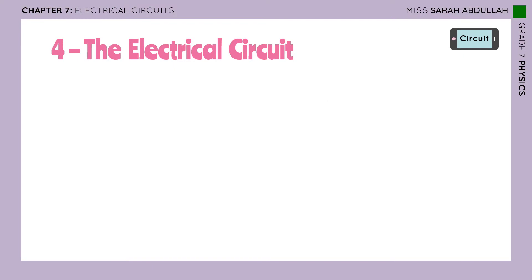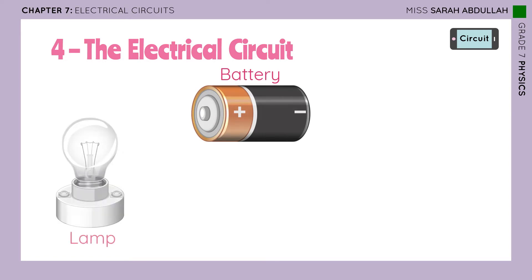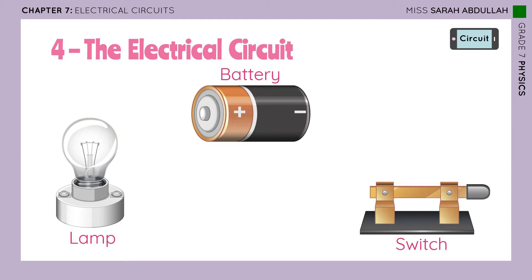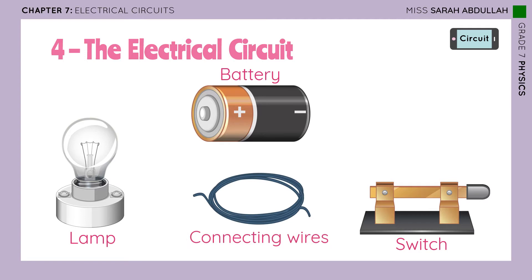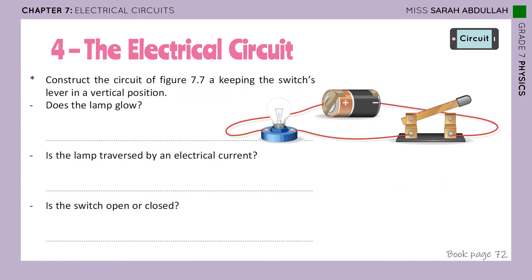What do we need to make a complete electric circuit? We already got introduced to the battery and the lamp. What else do we need for a simple circuit? We will need a switch, and also connecting wires to connect them all together. By using the battery, lamp, switch, and connecting wires, we get this circuit right here. I'll be applying this to the simulation in the upcoming few slides.